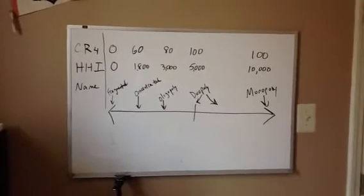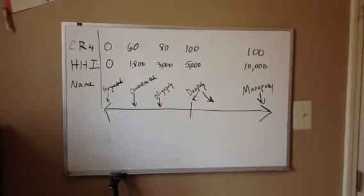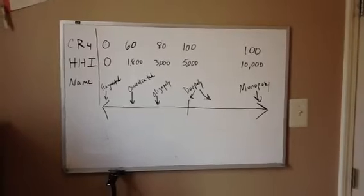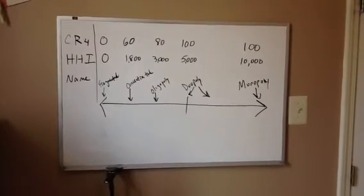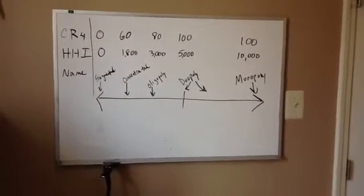So I have three levels here: CR4, HHI, and the name that I'll give to each industry structure. CR4 is the concentration ratio of the top four firms. How much of the market did the top four firms own?